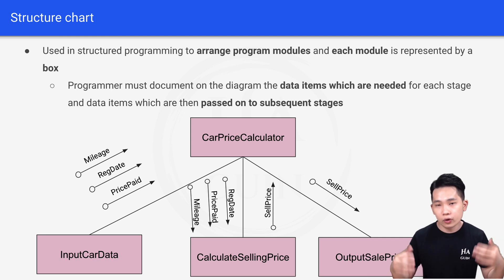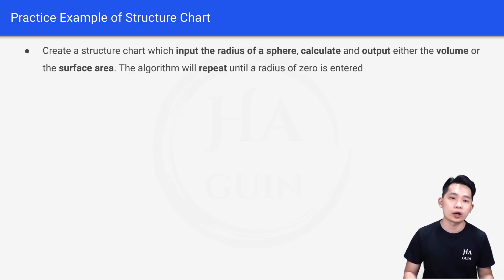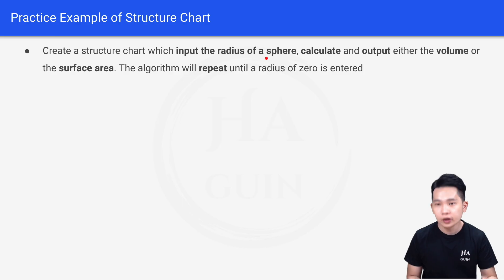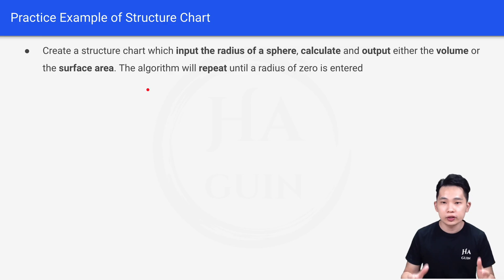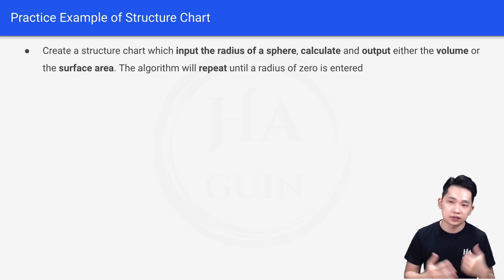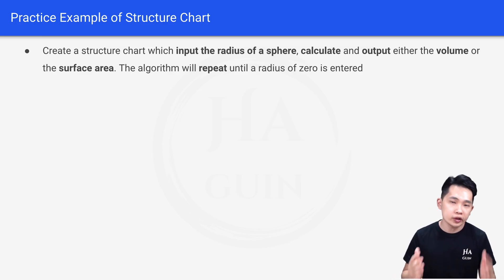Now let's look at a more complicated structure chart example. Create a structure chart which inputs the radius of a sphere, calculates and outputs either the volume or the surface area. The algorithm will repeat until a radius of zero is entered. So for this program, we'll take in radius as input, calculate either the volume or the surface area, and keep repeating until a radius of zero is entered.